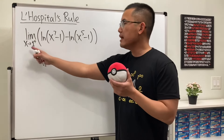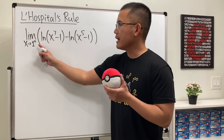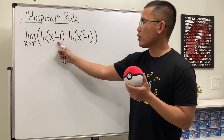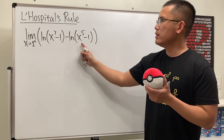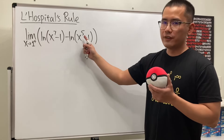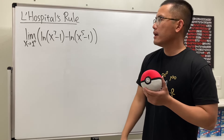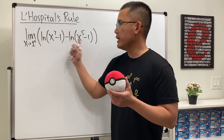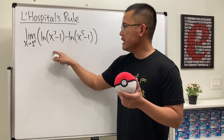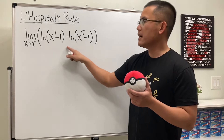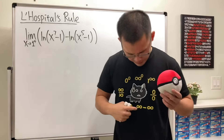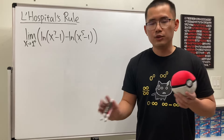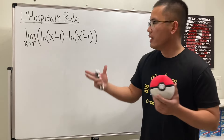Here we have the limit as x approaching 1 plus, and then we have ln of x to the 7th power minus 1, minus ln of x to the 5th power minus 1. If we put 1 plus into all the x's, we will get negative infinity plus infinity, which is the same as infinity minus infinity. It's just indeterminate.